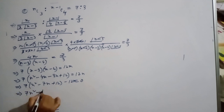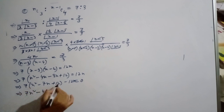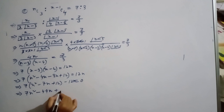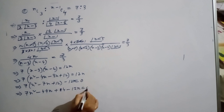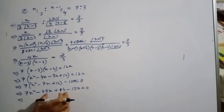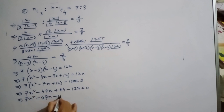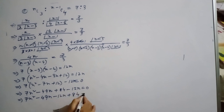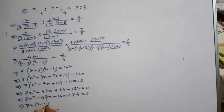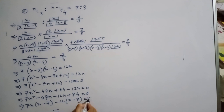After simplification: 7n squared minus 49n minus 12n plus 84 equals 0.